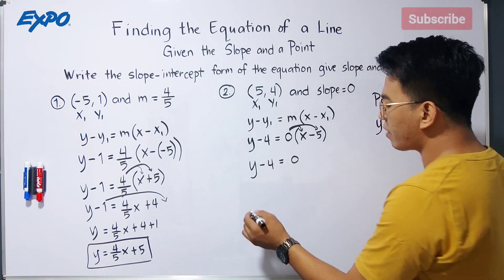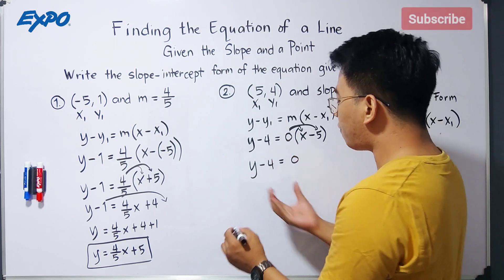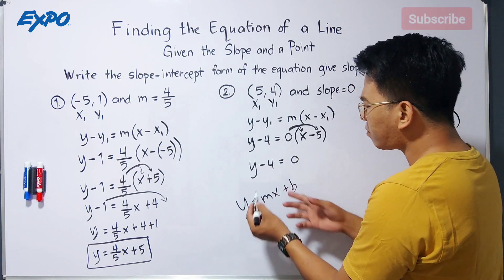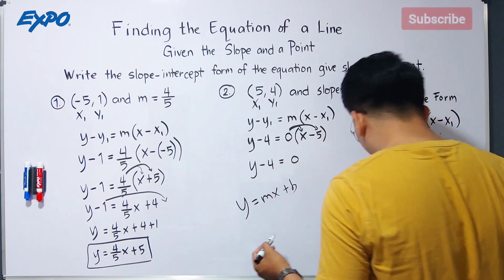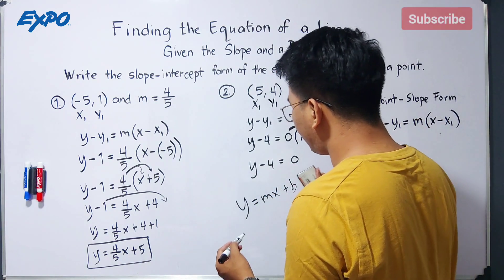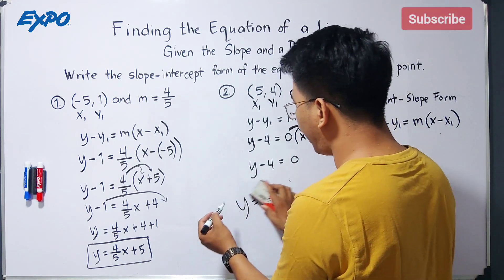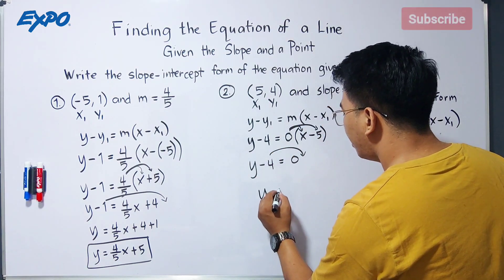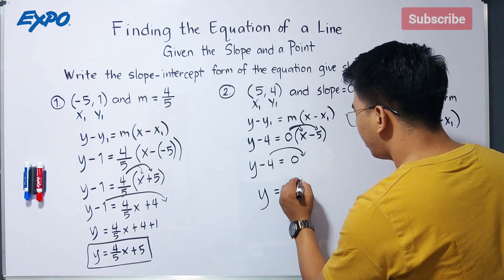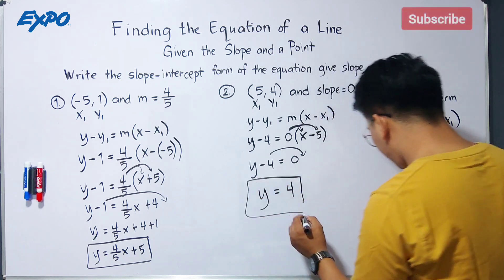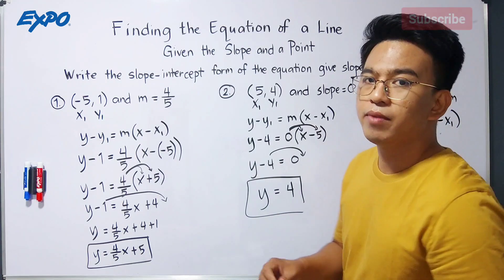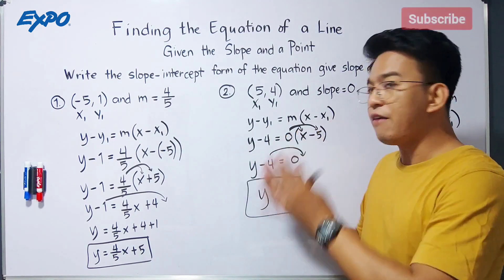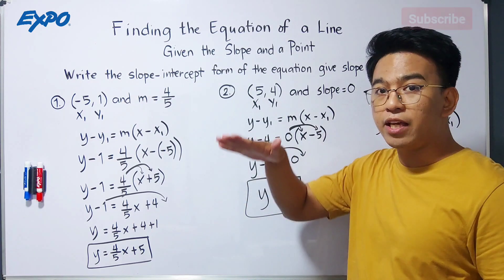So the question here is, how are we going to transform this into y is equal to mx plus b? What we need to do is we will transpose negative 4 to the other side of the equation to isolate the variable y. So the final answer is simply this one: y is equal to 4. That is the equation for this given information.